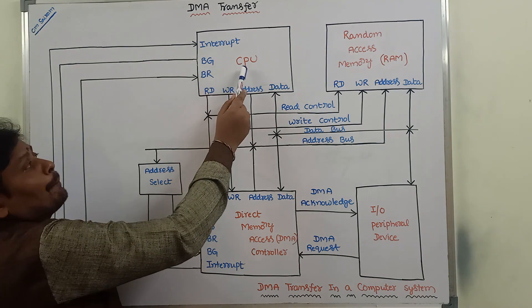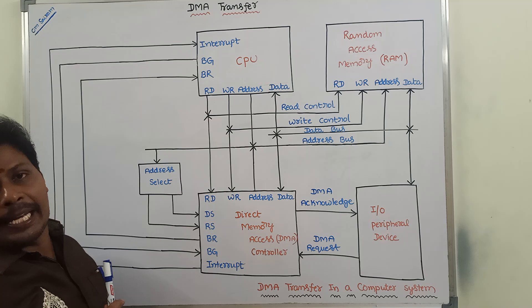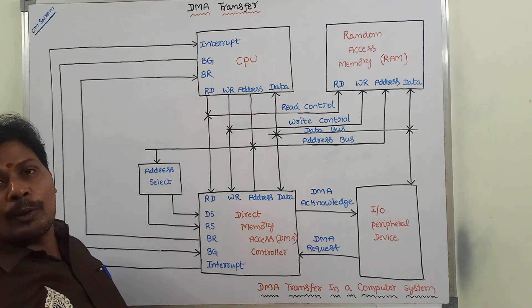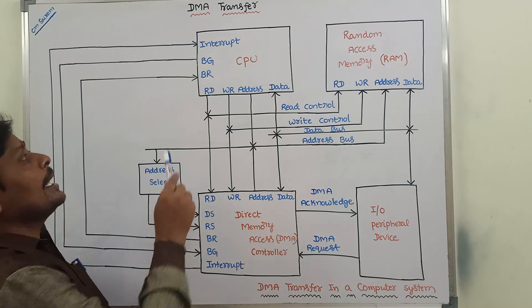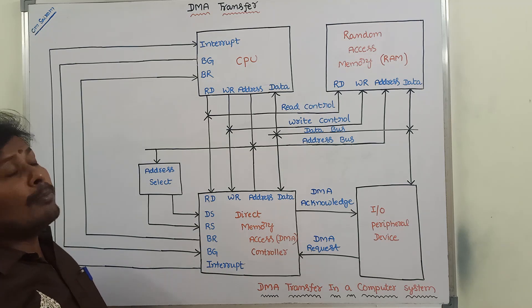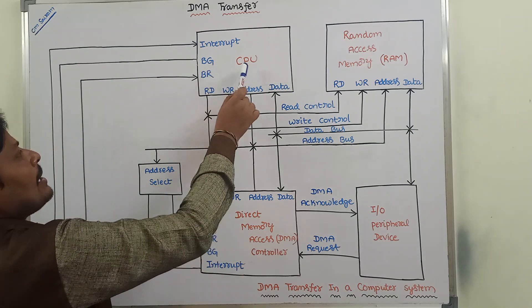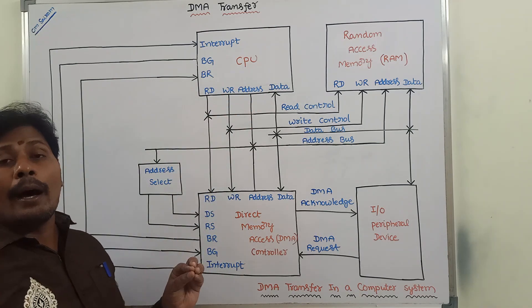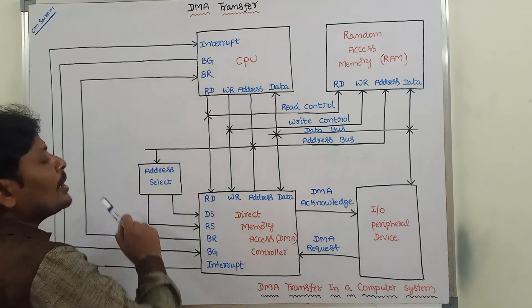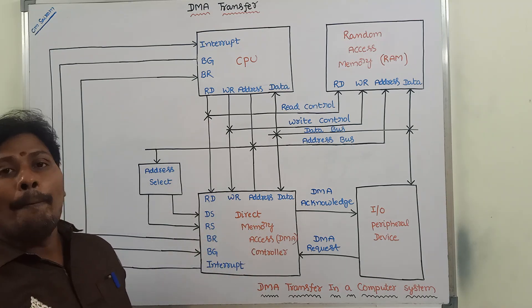After that, the CPU replies through the BG line — the bus grant line — by setting the bus grant line value equal to 1, and disables all the buses: that is, the address bus, data bus, and control bus that are handled by the CPU.